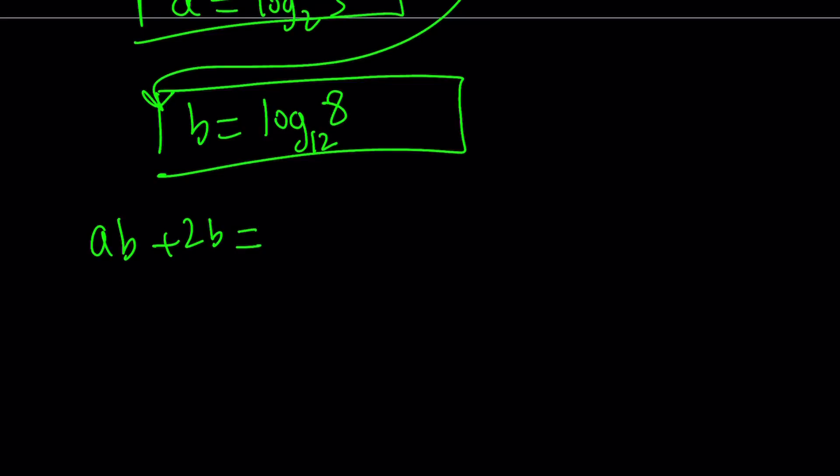ab plus 2b. What is a? Log 3 with base 2. Great. And what is b? b is also given. But let's go ahead and do this. I have a common factor. Why don't we take advantage of that? Let's take out a b. Then I get a plus 2.